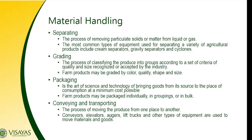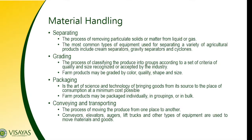The other activity is separating. This is the process of removing particulate solids or matter from liquid or gas. The most common types of equipment used for separating agricultural products include rim separators, gravity separators, and cyclones. Separating differs from sorting in that separating involves removing solids from liquid or gas — for products that have been mixed with liquid.